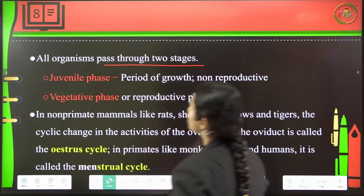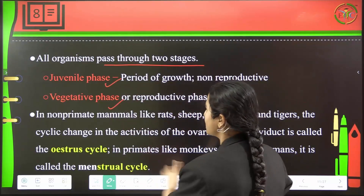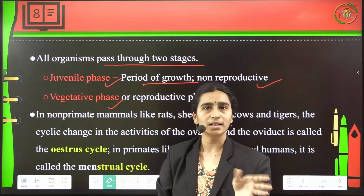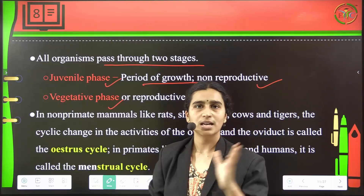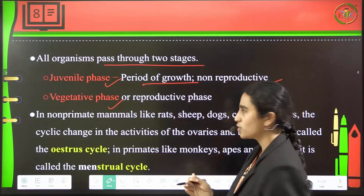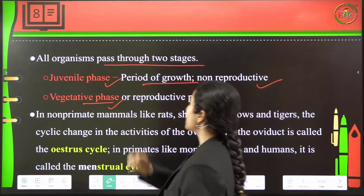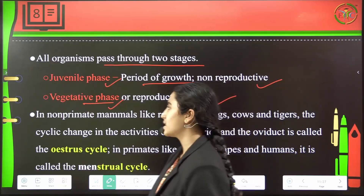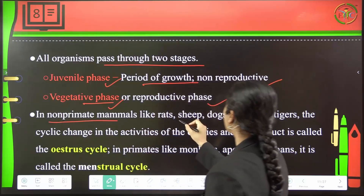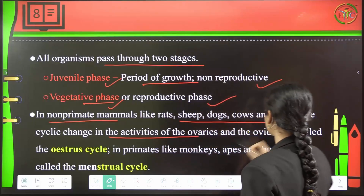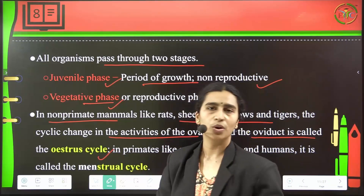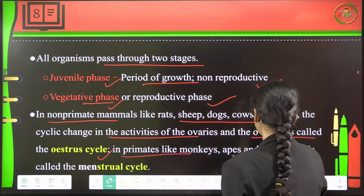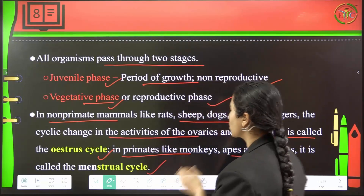All organisms will pass through two stages — the juvenile phase and the vegetative phase — before reaching the senescent phase. The juvenile phase is the period of growth or non-reproductive phase, from birth till puberty, where organs are developing and completely immature for reproductive cycles. The vegetative or reproductive phase is where organisms reach puberty and become capable of reproducing. In non-primate mammals like rats, sheep, dogs, cows, and tigers, cyclic changes in the ovaries and oviducts are called the estrous cycle. In primates like monkeys, chimpanzees, apes, and humans, it is called the menstrual cycle because they undergo menstruation.